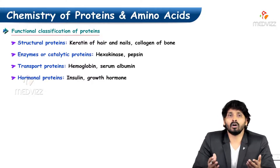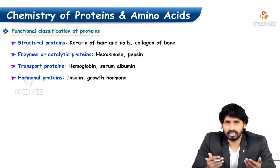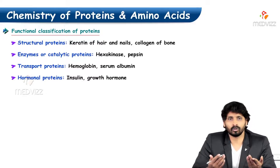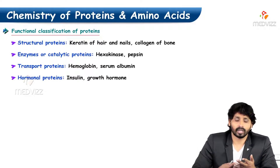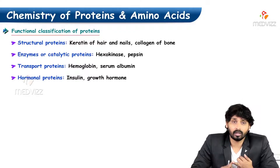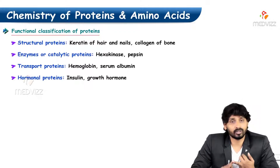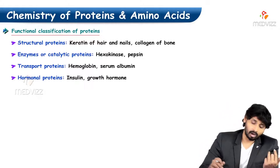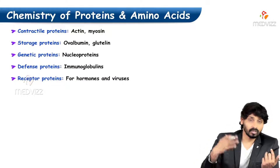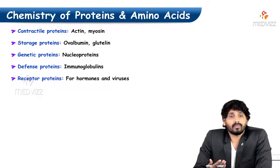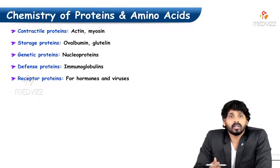Fourth, hormonal proteins — these are polypeptides that act as hormones, such as insulin and growth hormone, which are protein in nature. Fifth, contractile proteins, which are required for muscular movements — examples are actin and myosin.